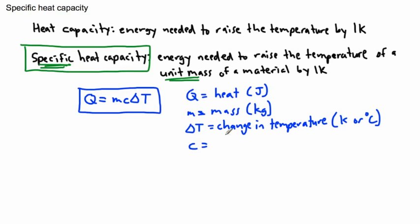And finally we have this little c. This is not the speed of light that we often see in physics. This c is called the specific heat capacity. This is the one that we need: specific heat capacity.